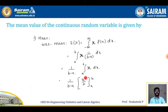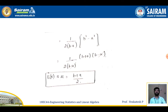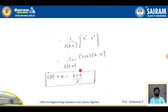Integrating x gives x²/2. Keeping 1/(b - a) as is and applying the limits, we get (b² - a²) · 1/(2(b - a)). Expanding b² - a² = (b + a)(b - a), we can cancel (b - a) from numerator and denominator, giving (b + a)/2. So the mean μ = (a + b)/2 for the uniform distribution.